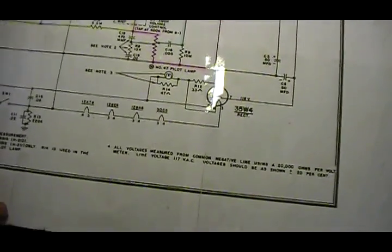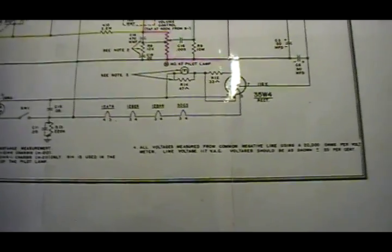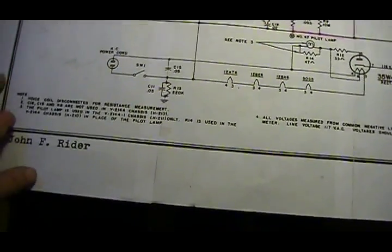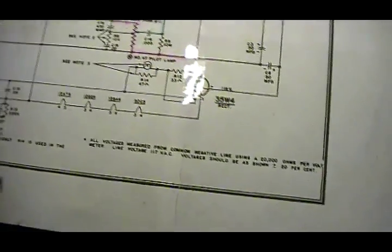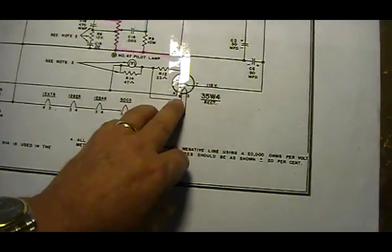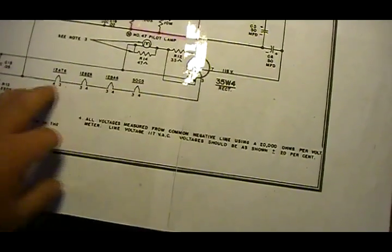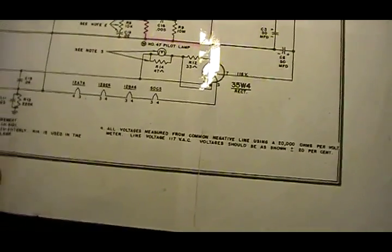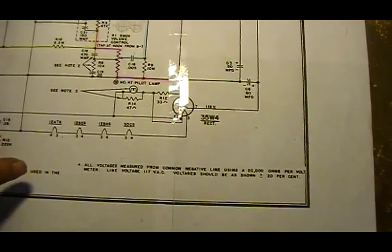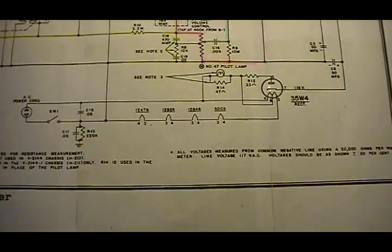Some things to talk about is how the power supply works. This is an extremely simple power supply. This is what they call an AC-DC radio, meaning that you could plug this thing into 117 volts DC and it would actually operate. The filaments are tied in series along with the rectifier to drop down the voltage. If you add all these up they'll come out pretty close to 117. There's no power transformer so you want an isolation transformer when you're working with them for two reasons. One, the absolute dangers.